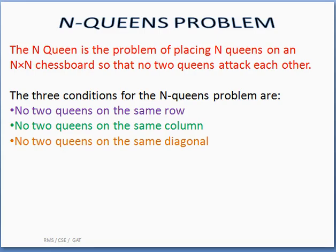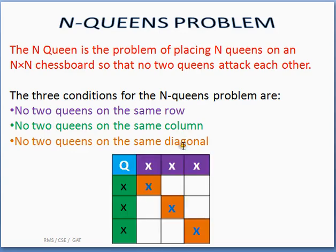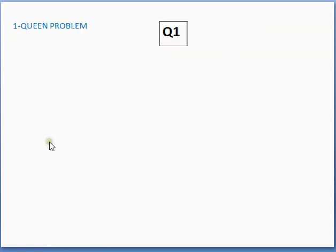The three conditions are: no two queens can be placed on the same row, no two queens can be placed on the same column, and no two queens can be placed on the same diagonal. Once a queen Q is placed, no second queen can be placed in the same row, same column, or same diagonal. If we place queens according to these conditions, no two queens can attack each other.